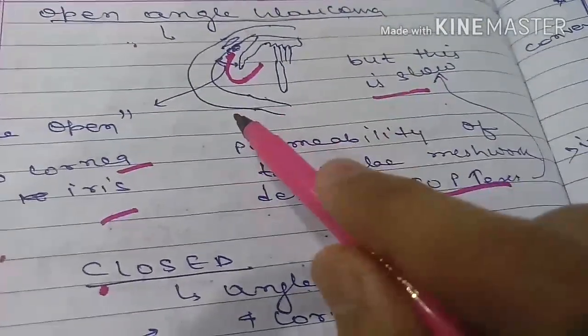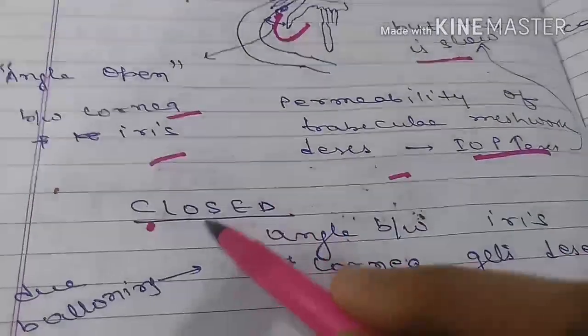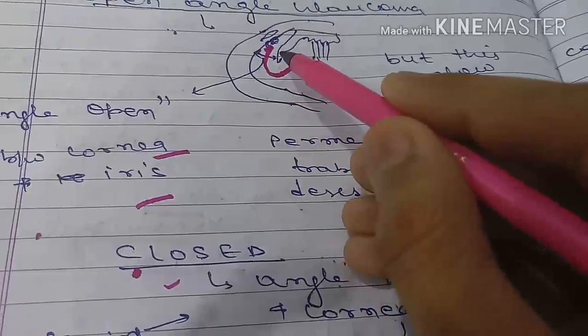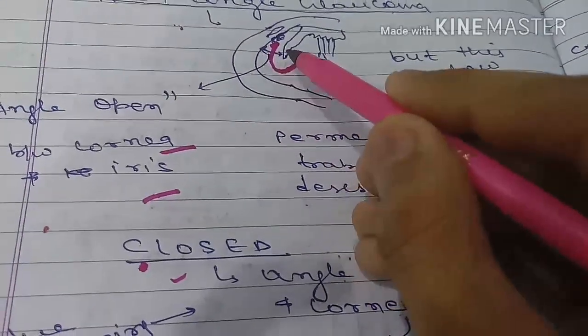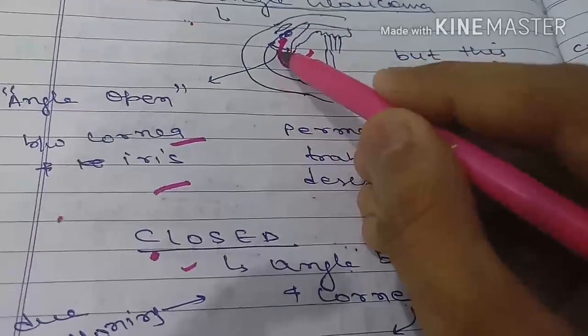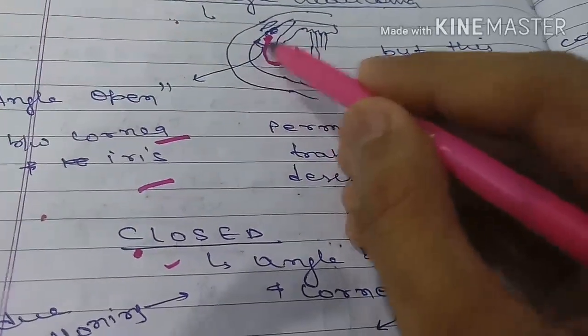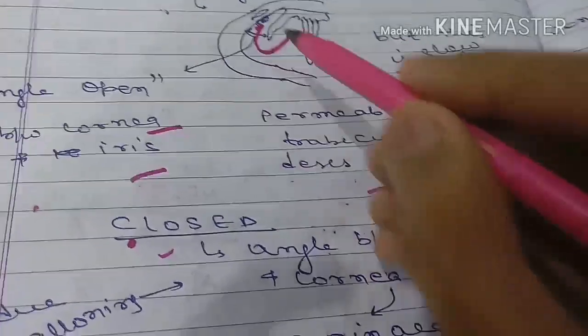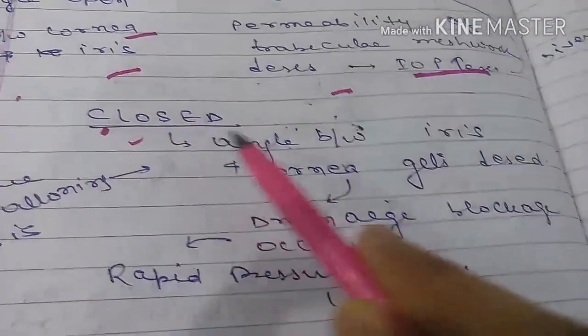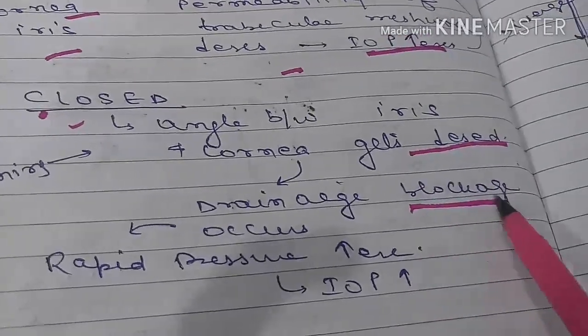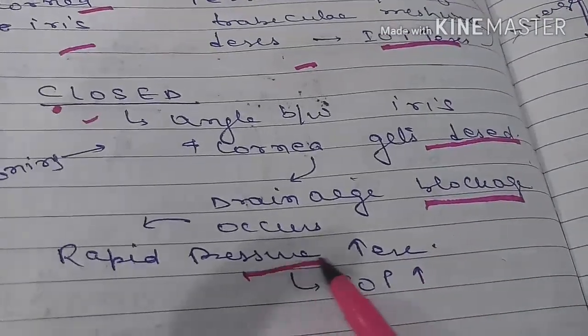In closed angle glaucoma, the angle between the iris and cornea will decrease due to the ballooning of the iris. The iris will go forward and the angle will decrease. The angle between cornea and iris gets decreased and drainage blockage occurs, which will lead to rapid increase in pressure.